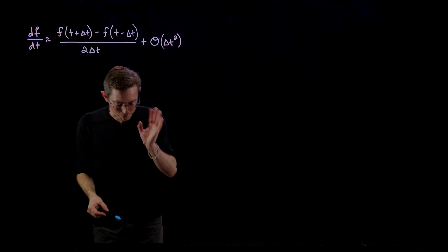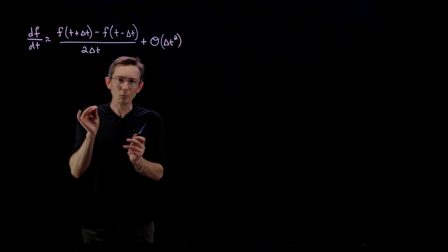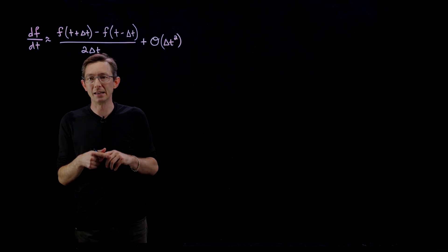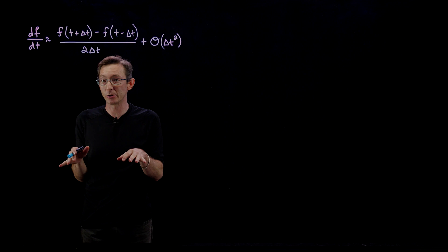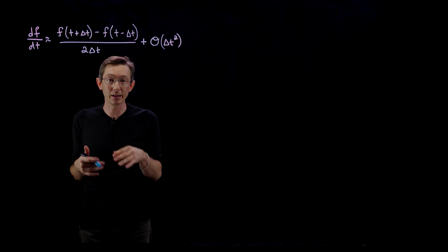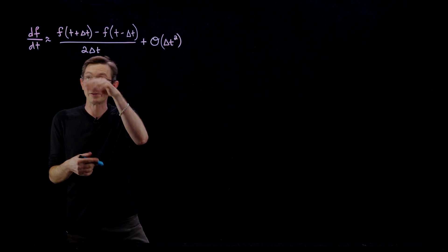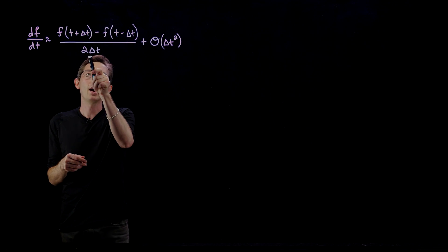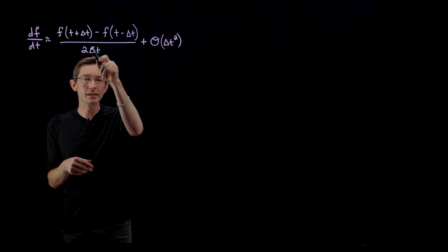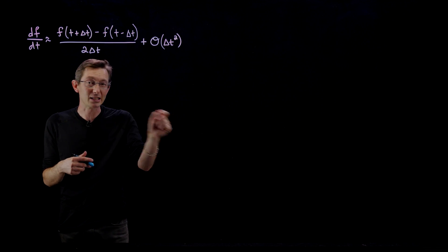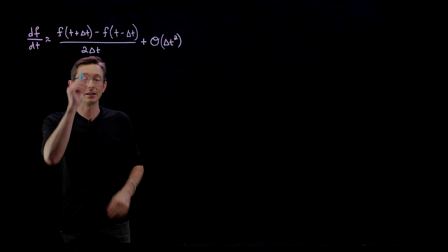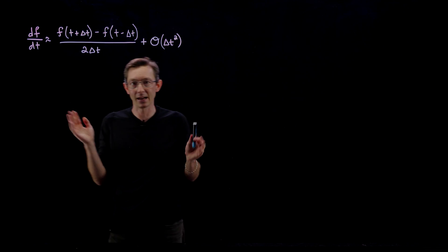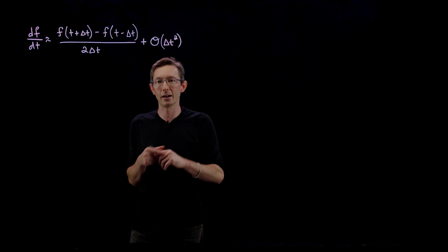This begs the question: why don't I just always make delta t as small as possible? Especially if I'm doing this numerically — I have some function and I'm just approximating it numerically. Why wouldn't I always use the smallest delta t possible, like delta t equals 10 to the minus 10 or 10 to the minus 100?